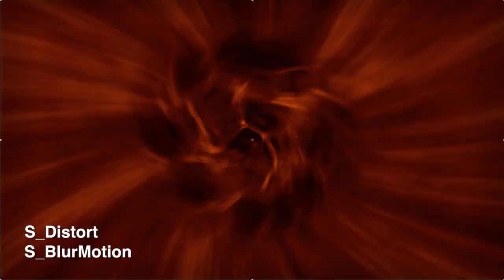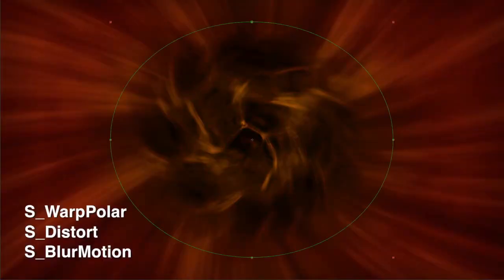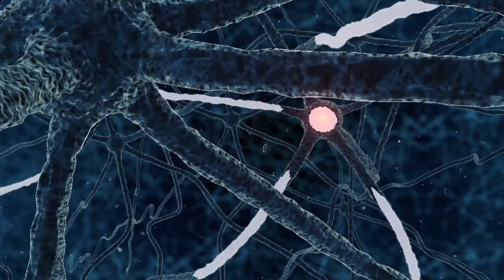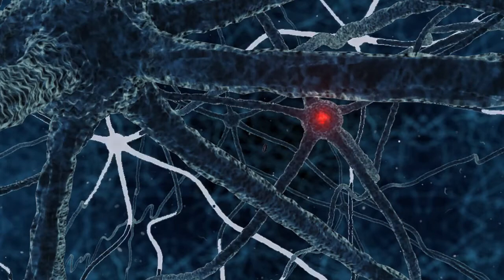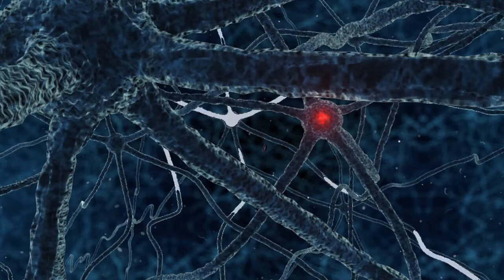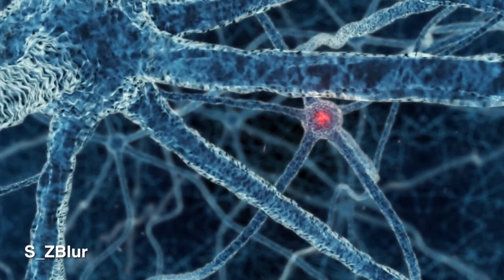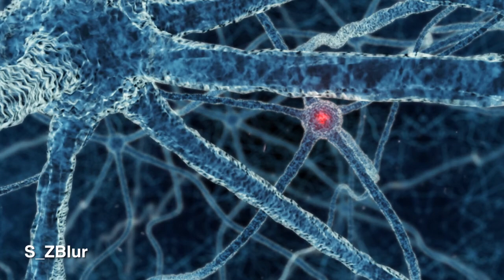In this example I've used Sapphire Blur Motion, Distort, Warp Polar, and Texture Flux to create this futuristic wormhole. My work in broadcast also involves 3D, and effects such as Sapphire Z Blur give me the flexibility to experiment.